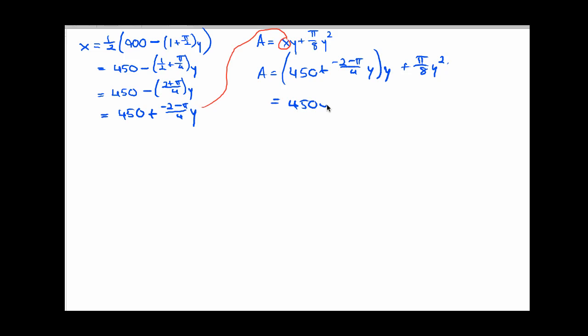Let's just keep working with this and see where it leads. This is 450y plus negative 2 minus pi over 4y squared, multiplying the y through here, plus pi over 8y squared. And I see an opportunity to add fractions here. So I'm going to multiply the top and bottom of this fraction by 2 to get like common denominators. And that would be negative 4 minus 2 pi over 8, and I'm going to add on another pi over 8 times y squared. So my area formula when it's finally simplified all the way down: 450y plus negative 4 minus pi over 8y squared. Now that's area as a function of one variable.